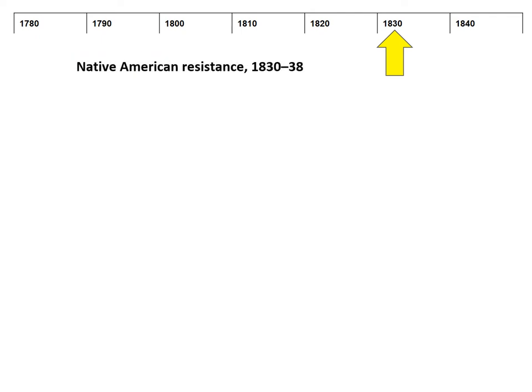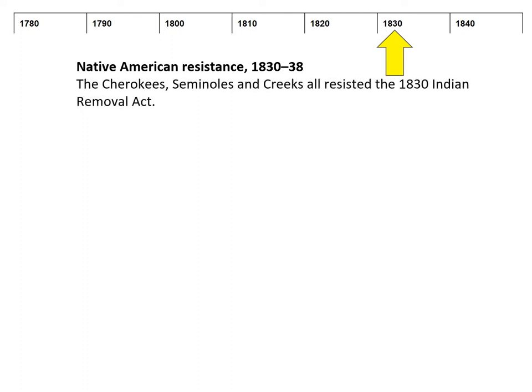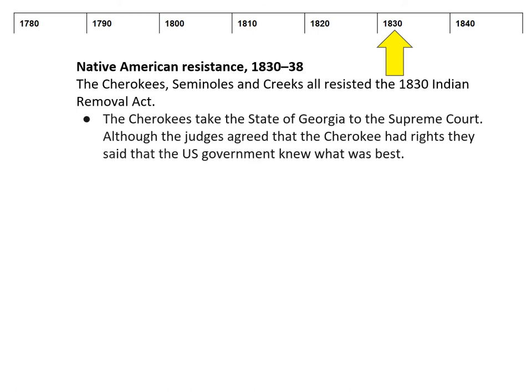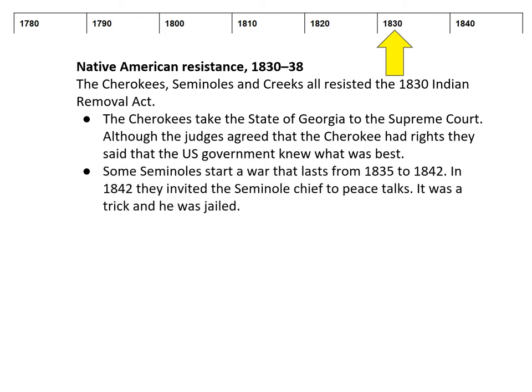Unsurprisingly, the Native Americans resisted this. The Cherokee, Seminole, and Creeks all resisted the 1830 Removal Act. The Cherokees decided to take a legal route, taking the state of Georgia to the Supreme Court, saying their rights had been defeated. Although the judges agreed that the Cherokee had rights, in the end they agreed with the US government's decision and said the government knew what was best, so the Cherokee's resistance was defeated.